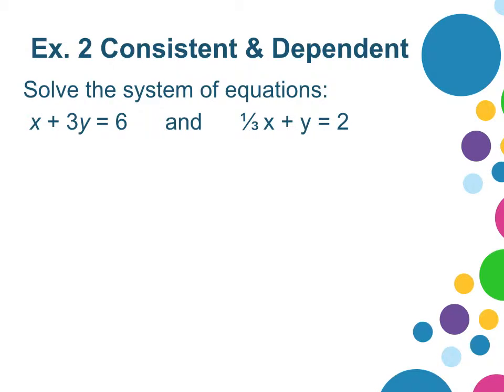To solve this system of equations, I can rewrite both equations as y equals mx plus b in slope-intercept form. So the equation on the right has a slope of negative one-third and a y-intercept of 2.